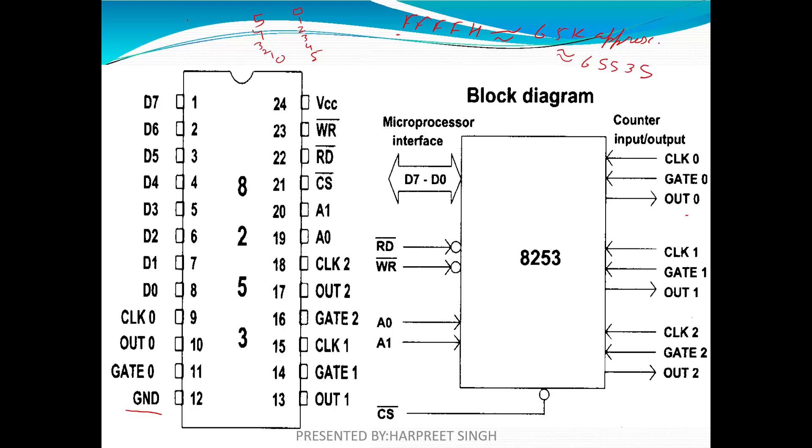The 8253/8254 supports two types of counters. First is binary with 16-bit counter. Second is BCD. When the counter is operated as binary, the maximum range counter can give is FFFFH. But in case of BCD, it can give the maximum value of 9999H.